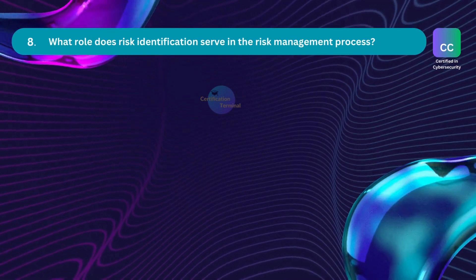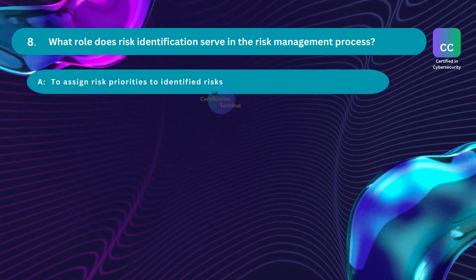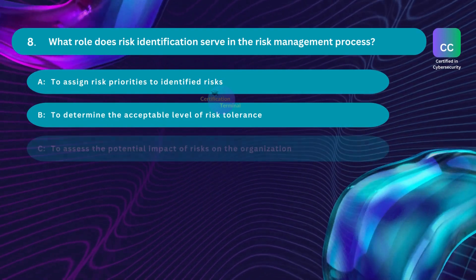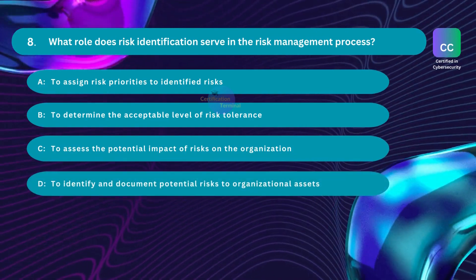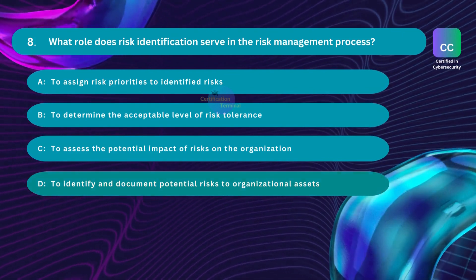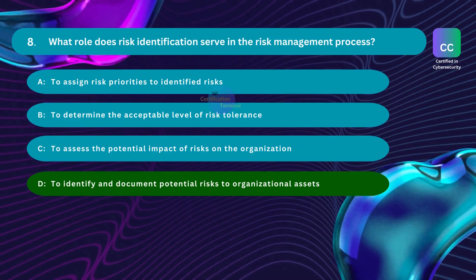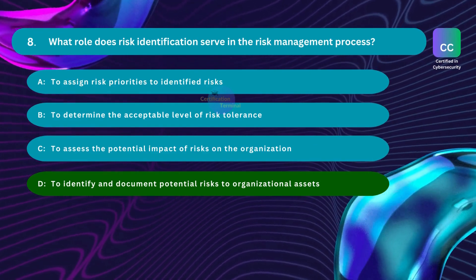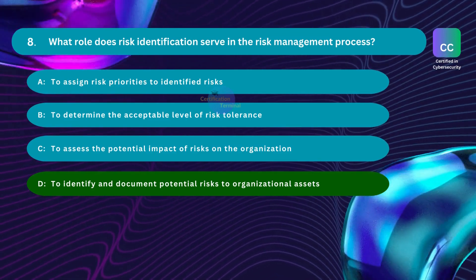Question number 8. What role does risk identification serve in the risk management process? Option A: to assign risk priorities to identified risks. Option B: to determine the acceptable level of risk tolerance. Option C: to assess the potential impact of risks on the organization. Option D: to identify and document potential risks to organizational assets. The correct answer is Option D. Risk identification involves the systematic process of identifying and documenting potential risks that could impact the confidentiality, integrity, or availability of organizational assets.